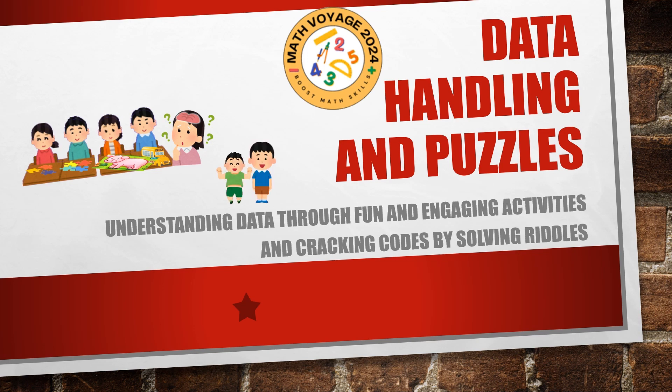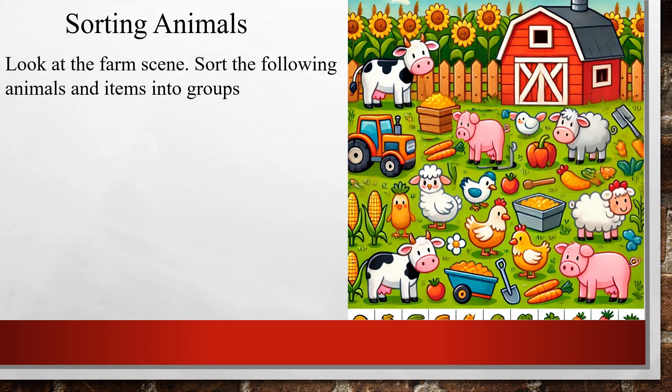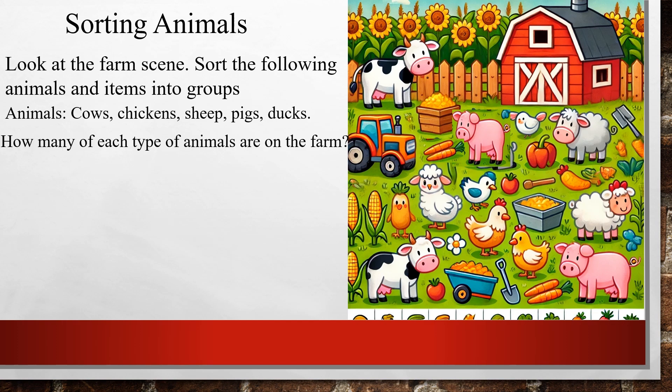So without any further delay, let's get started! Here is a farm scene — you have to sort the animals and items into groups. We will sort cows, chickens, sheep, pigs, and ducks. As we said in data handling, we have to sort first. How many of each type of animal are on the farm?